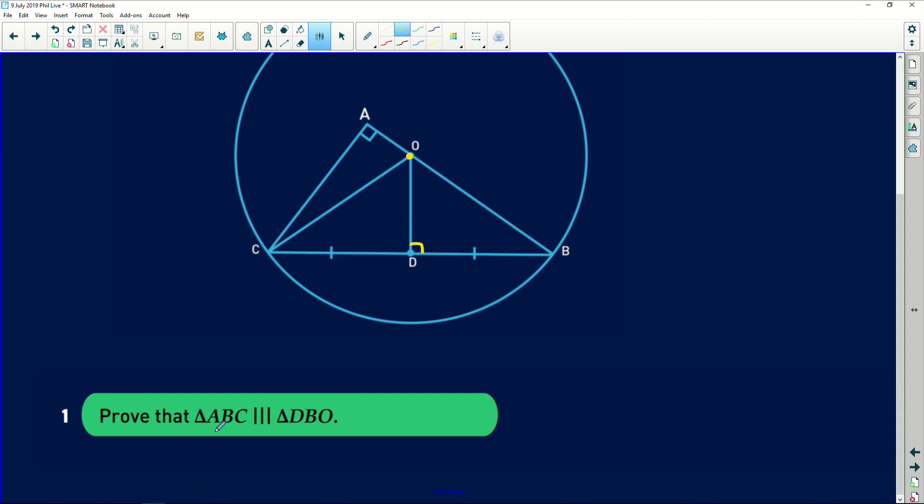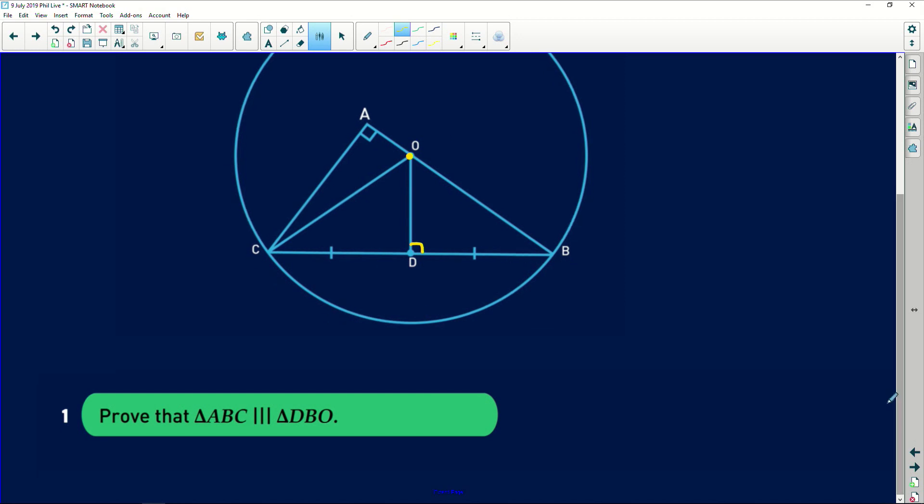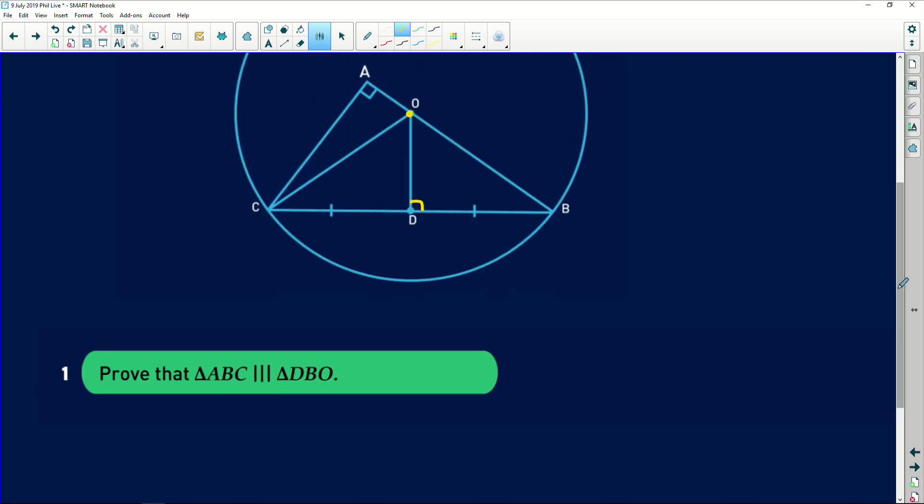Firstly, it says prove that triangle ABC is similar to triangle DBO. So obviously we have no indication of side lengths, which means that we can't use sides in proportion. So we need to use angles. In triangle ABC and triangle DBO, you're setting the stage for your similarity proof.